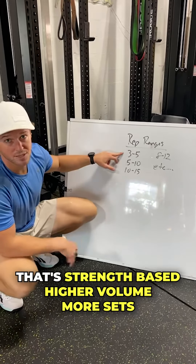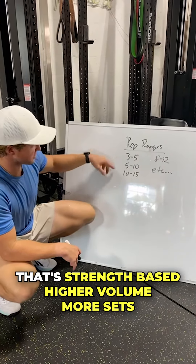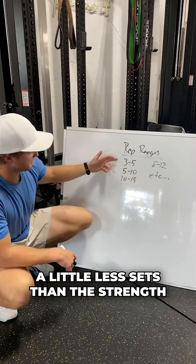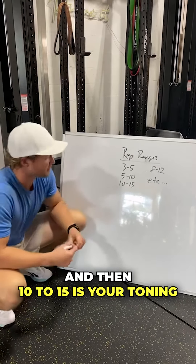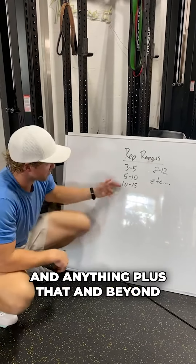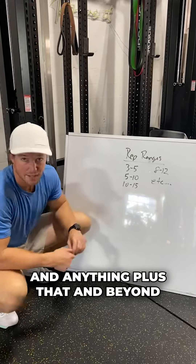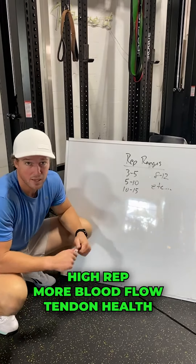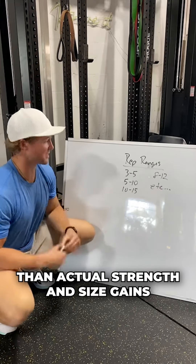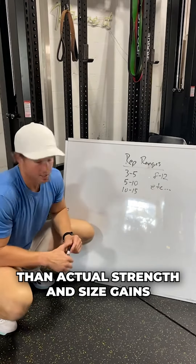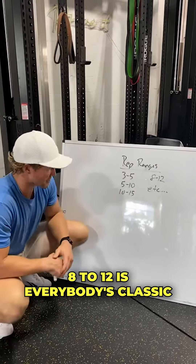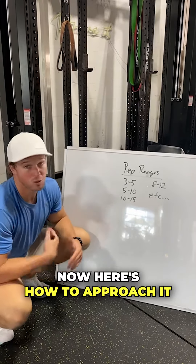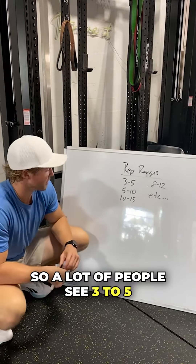Typically your 3 to 5 is strength — that's strength based, higher volume, more sets. 5 to 10 is hypertrophy, a little less sets than the strength. Then 10 to 15 is your toning, and plus that and beyond is also considered toning — high rep, more blood flow, tendon health than actual strength and size gains. 8 to 12 is everybody's classic bodybuilding hypertrophy range.